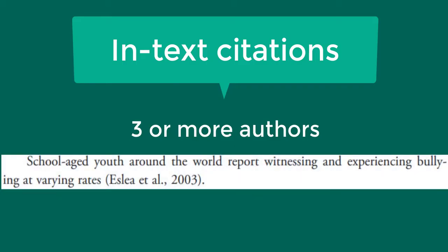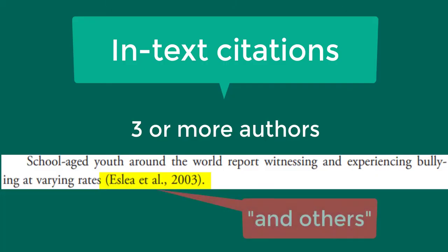If the material you are citing has three or more authors, list only the first author's name followed by 'et al.', comma, and then the year of publication. Et al. is a Latin phrase that means 'and others,' and it replaces the other authors' names. Pay attention to where the period and comma go for this. Use et al. every time you cite a source with three or more authors, even in the first in-text citation.